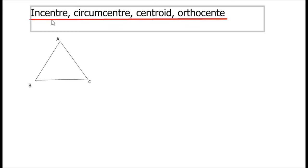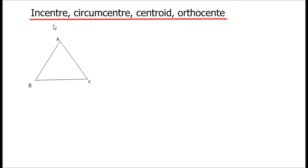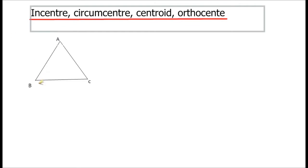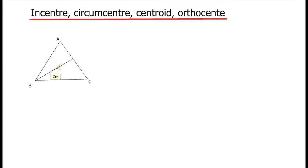In-center is a point of intersection of angular bisectors. Here we are having angle B, that is angle ABC. The angular bisector divides this angle into two equal parts. Suppose if angle ABC is 60 degrees, this angle will be 30 degrees and this angle will be 30 degrees. In this manner we can draw three angular bisectors to three angles.